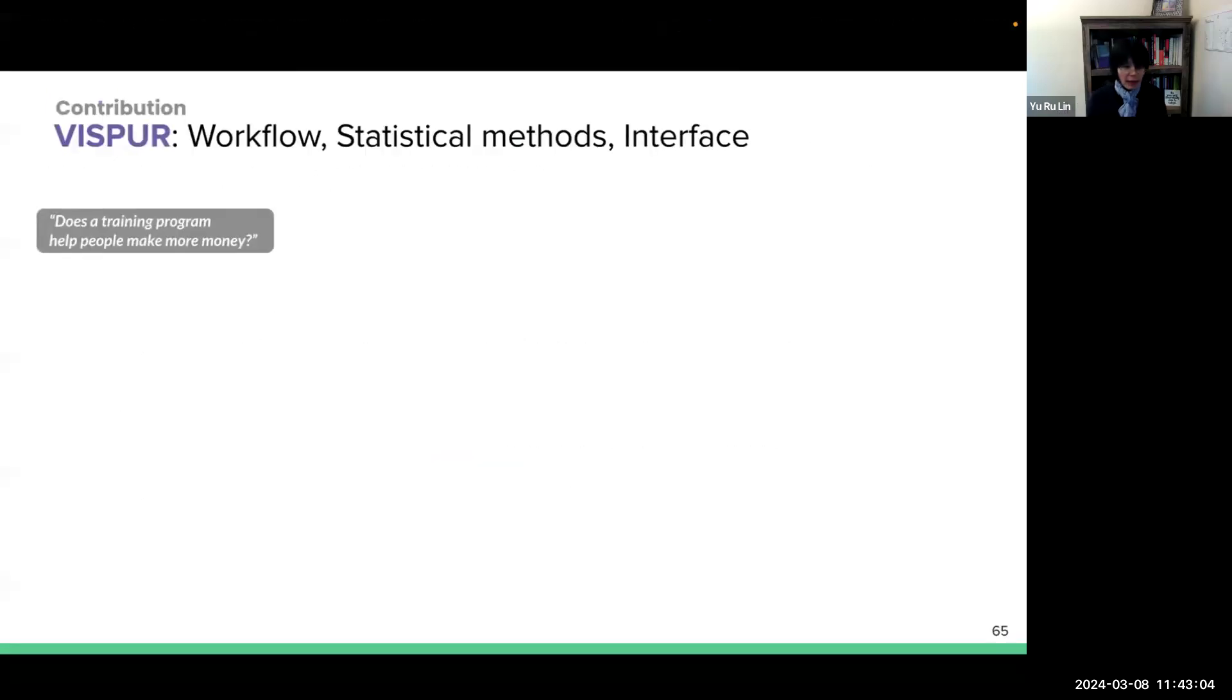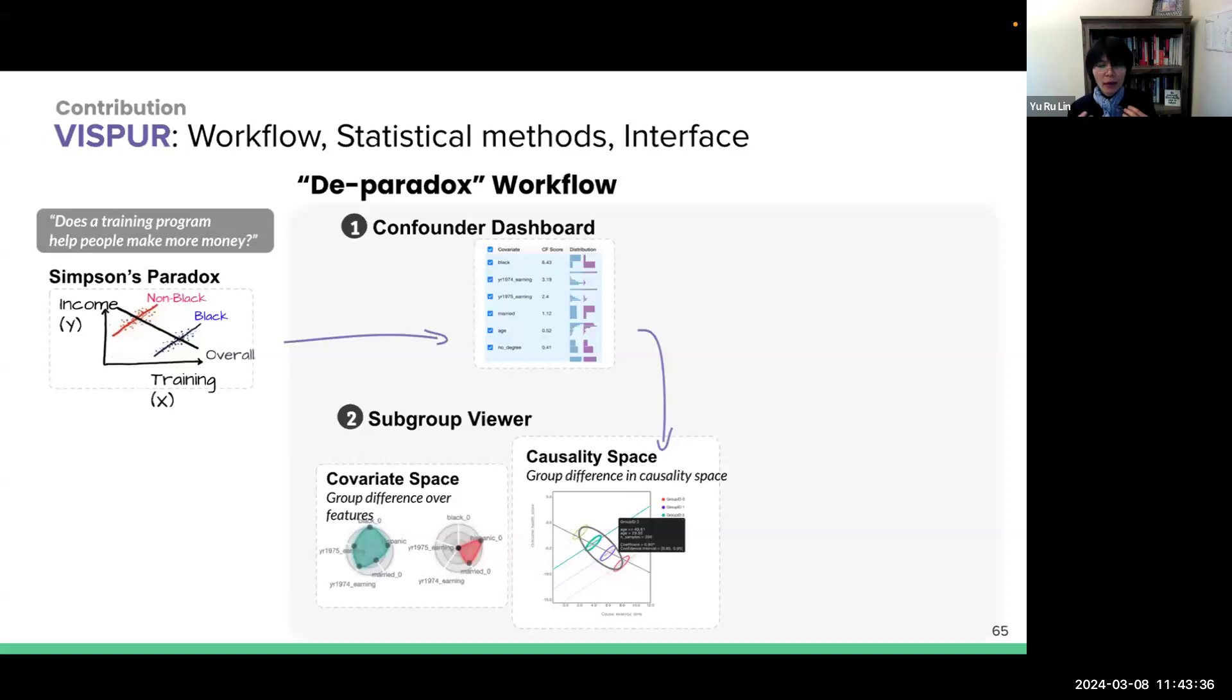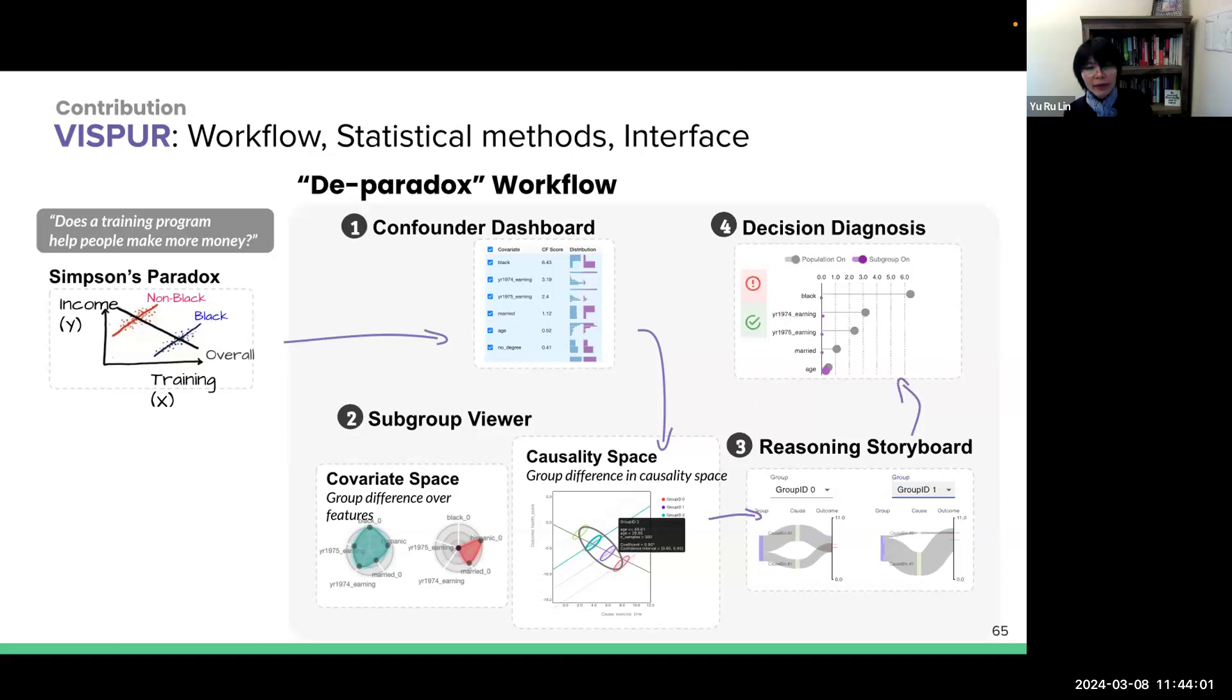So let me show how this works. So suppose we want to know, does the training program help people to make more money? And we want to see if Simpson's paradox exists. So the system provides a de-paradox workflow. First, a confounder dashboard can identify variables that are confounders to distort the cause-outcome relationship. And then, the subgroup viewers help to see whether a cause-outcome trend can be generalizable to subgroups. And then, the reasoning storyboard shows why the trends are paradoxical. And finally, the decision diagnosis allows users to see whether there are any alternative explanations for the cause-outcome trend.